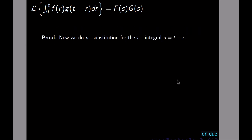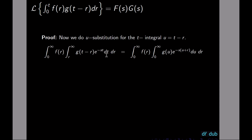Now we're going to do a u-substitution for that t integral. The substitution we'll use is u equals t minus r, basically to get rid of the t minus r term and handle any plus or minus signs in the exponent of e.